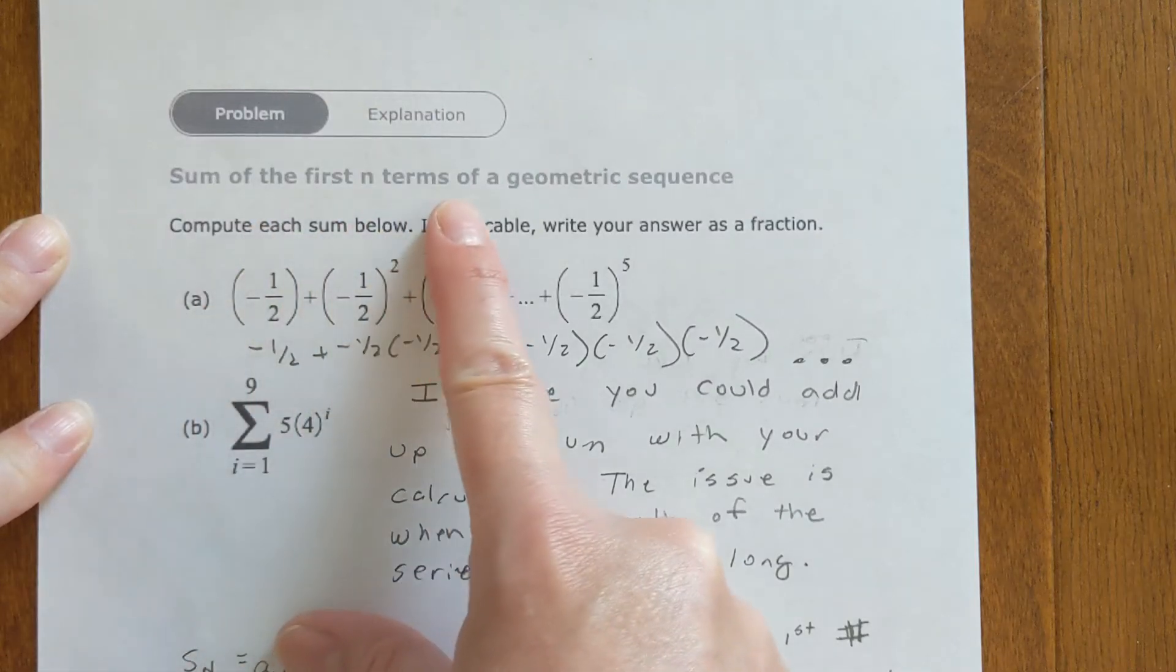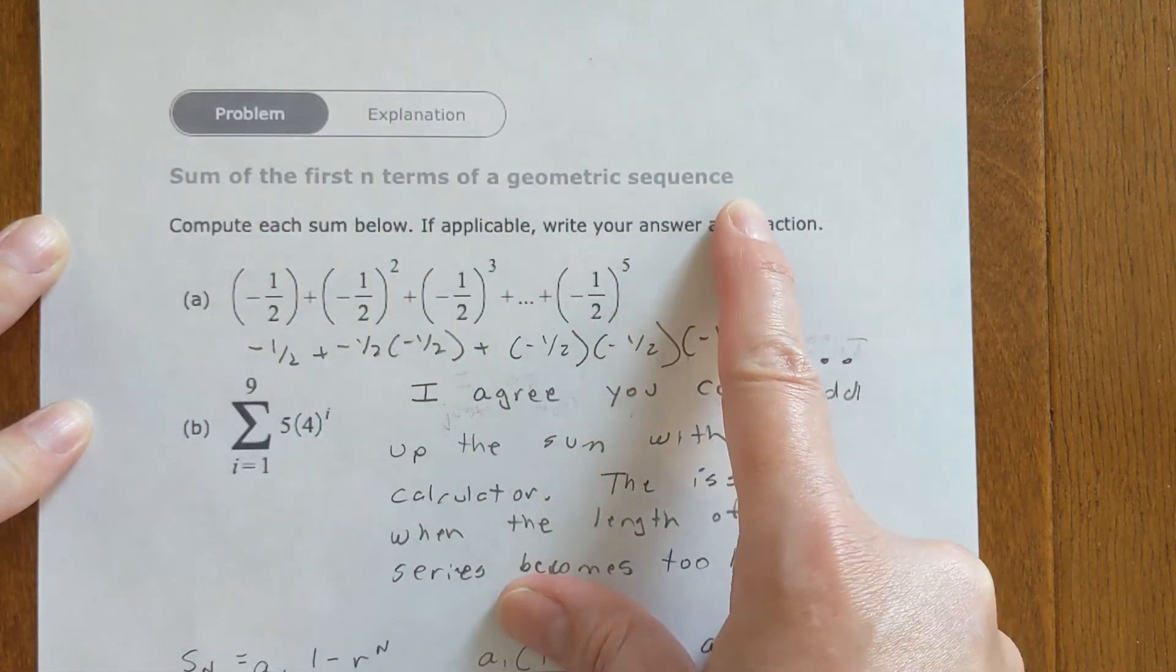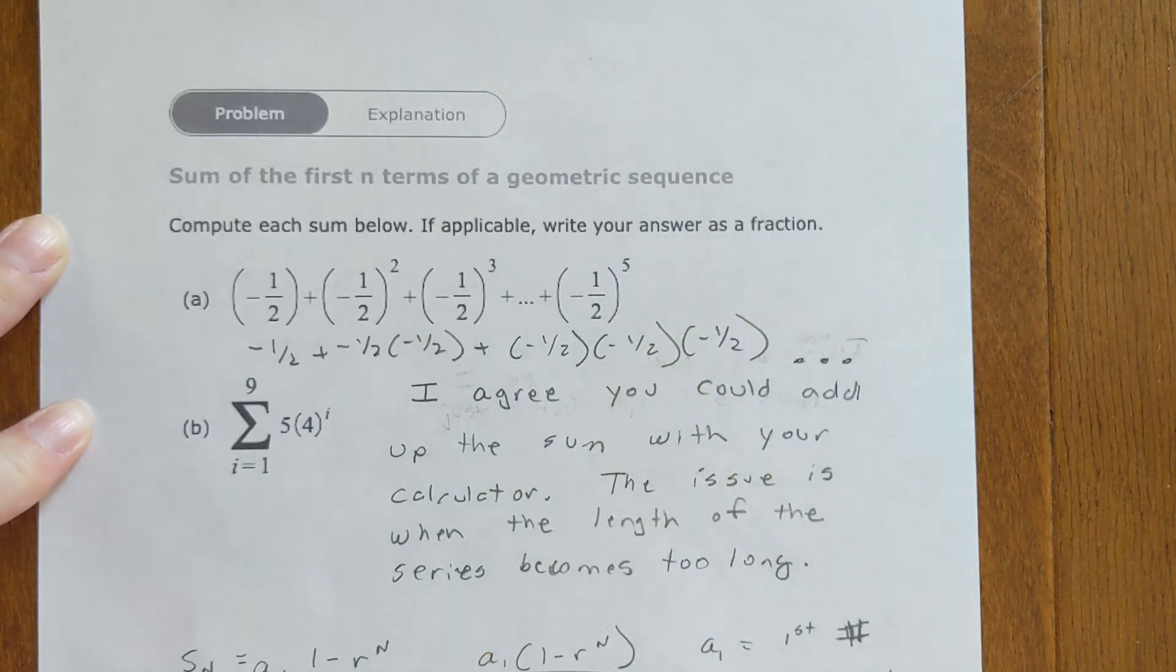This video finds the sum of the first n terms of a geometric sequence. I agree with several of you that commented in our group chat that you could just add them all up. That would be fine. Some of you really want to use the formula, though.